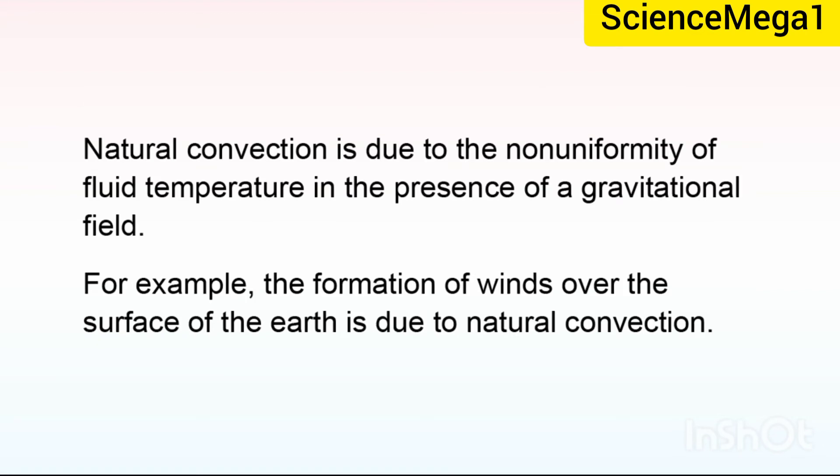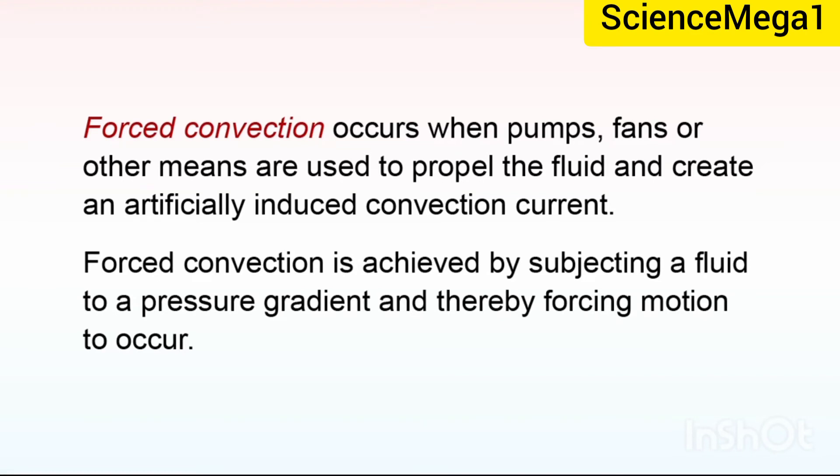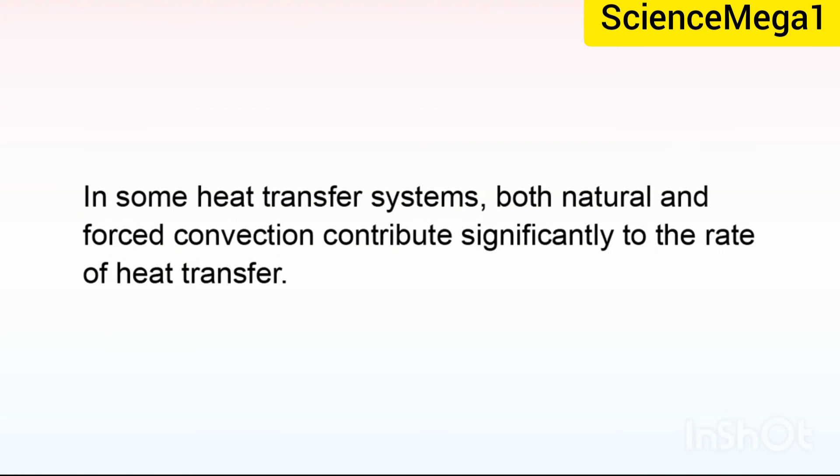Natural convection is due to the non-uniformity of fluid temperature in the presence of a gravitational field. For example, the formation of wind over the surface of the earth is due to natural convection. Forced convection occurs when pumps, fans or other means are used to propel the fluid and create an artificial induced convection current. Forced convection is achieved by subjecting a fluid to a pressure gradient and thereby forcing motion to occur. In some heat transfer systems, both natural and forced convection contribute significantly to the rate of heat transfer.